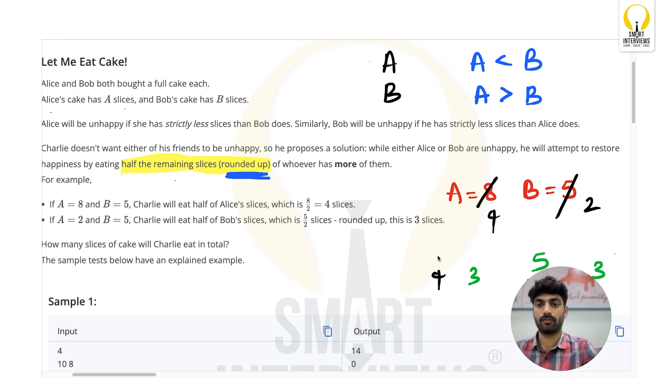Still is anyone unhappy? Now Alice has 4 slices and Bob has 2 slices. Still Alice is unhappy so now Charlie will try to eat from Alice's cake. So half of 4 is going to be 2 and Charlie will eat 2 slices. The question is asking us to print how many slices of cake will Charlie eat in total. So in first turn Charlie ate 4 slices from Alice, in the next turn Charlie ate 3 slices from Bob's cake, and at the end Charlie ate 2 slices from Alice. So addition of these three will give you the result which is 9.